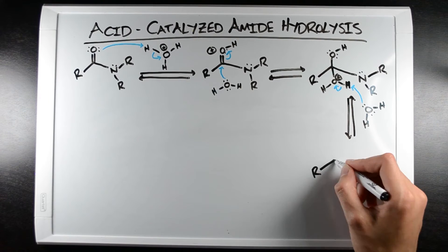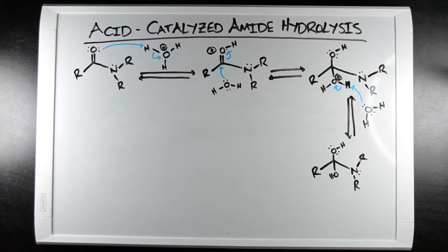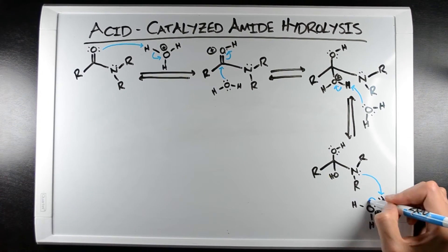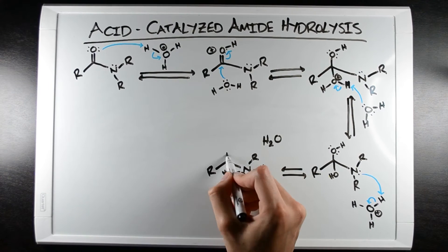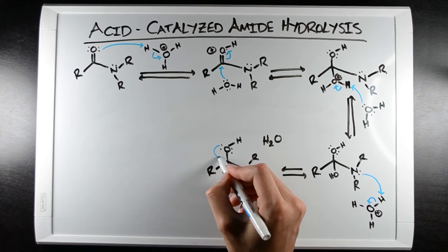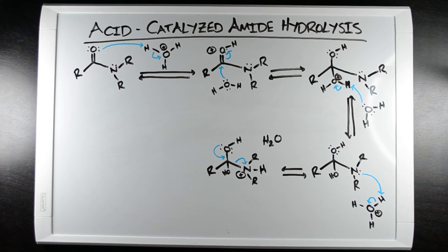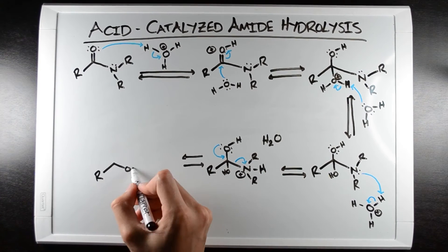Next, the lone pair on the amide's nitrogen picks up a proton and becomes a good leaving group. Now, the lone pair on one of the hydroxyl groups comes down, kicking off the amino group and breaking the amide bond.